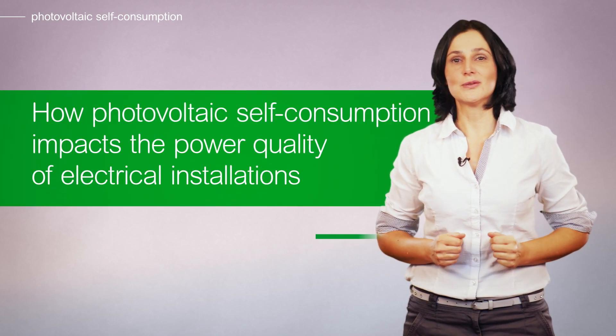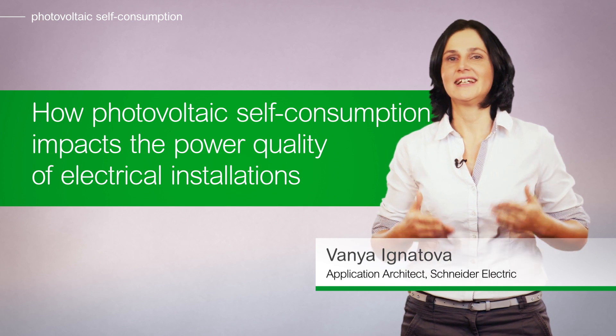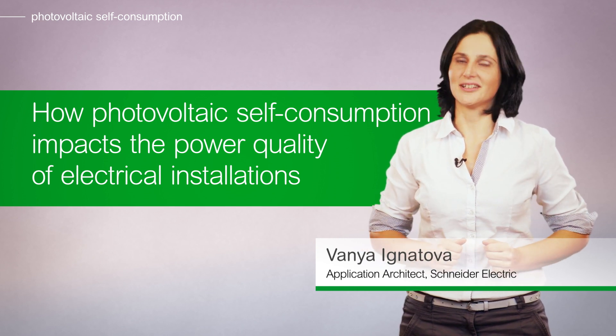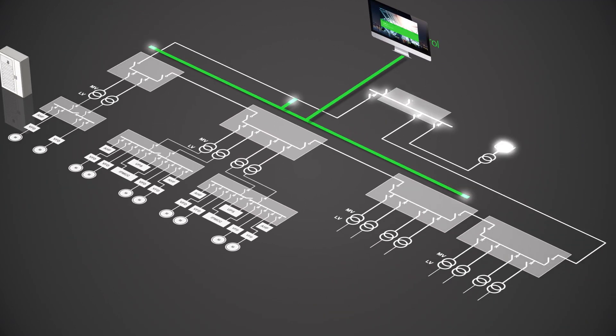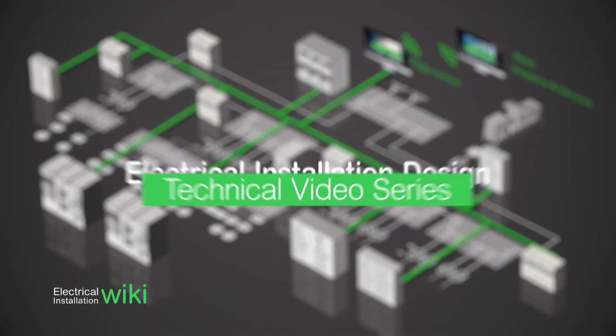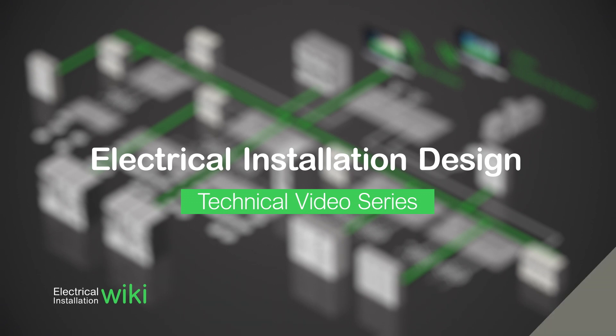Hello and welcome to this video about how photovoltaic self-consumption impacts the power quality of electrical installations. Photovoltaic systems can generate three different types of disturbances on the AC side of the electrical installation: DC residual current, harmonics, and imbalance.